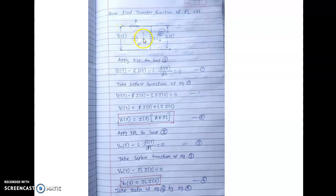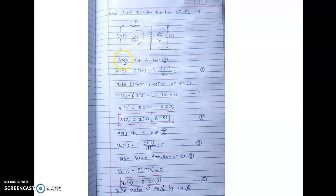First of all, draw the circuit diagram — that is the RL circuit. We are measuring the voltage across the inductor, and the resistor is connected here. V(t) is the input voltage applied to the circuit, and V(t) output is the voltage measured across the inductor. This is loop 1 and this is loop 2. First of all we need to apply KVL, Kirchhoff's Voltage Law, to loop 1.